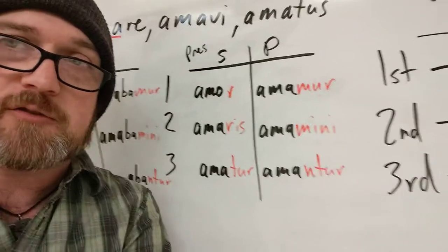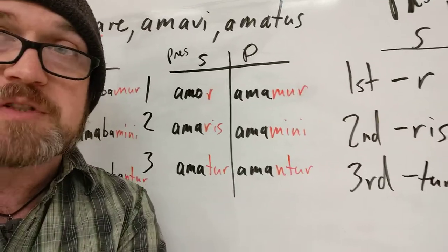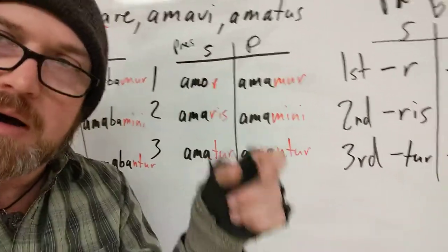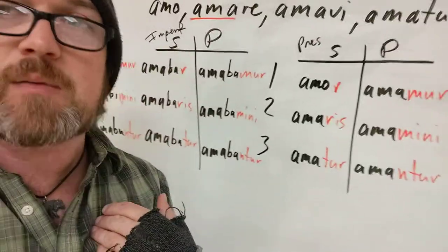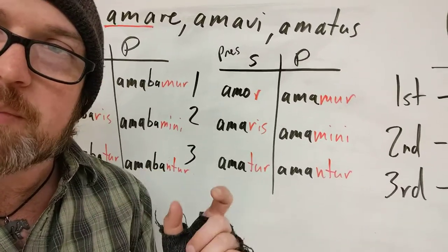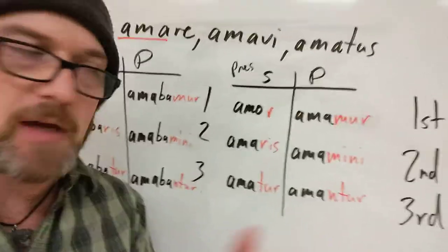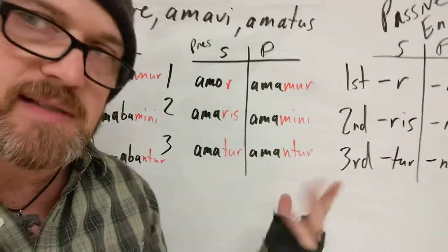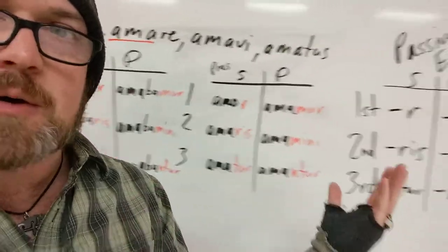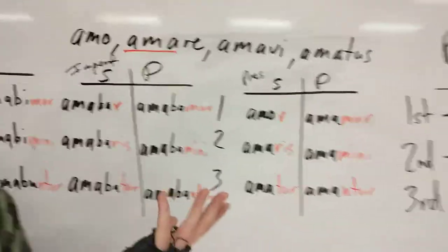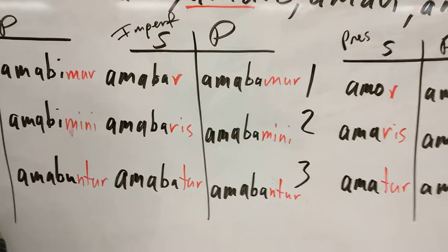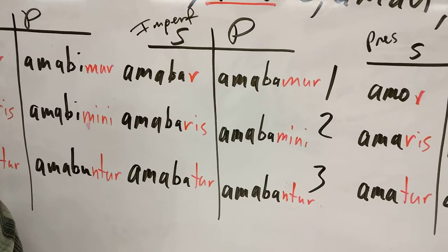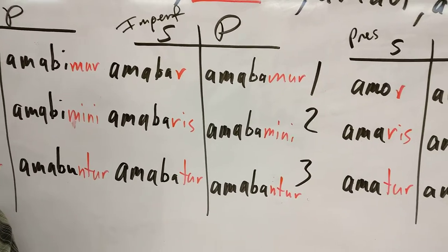You'll notice that in translation I always have some form of the verb 'to be' — it's not 'I love,' it's 'I am loved,' 'you are loved.' In English, that's how we make verbs passive: we incorporate the verb 'to be' as a helping verb. The same goes for all of the present system. The imperfect is present stem plus -ba- plus the ending, whether active or passive. So where I have amabam, amabas, amabat — I now have amabar, amabaris, amabatur.